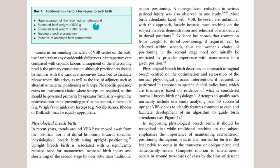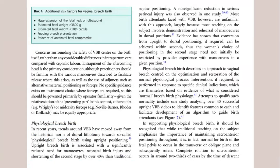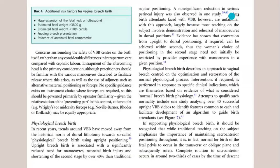Additional risk factors contraindicating vaginal breech include hyperextension of the neck, macrosomia, IUGR, and footling breech. In recent years, trends around vaginal breech birth have moved from historical dorsal lithotomy position to physiological breech birth using an upright position. Upright breech birth is associated with significantly reduced need for maneuvers, reduced unilateral brain injury, and shortening of the second stage by over 40% compared to the traditional supine position. It also reduces perineal injury.